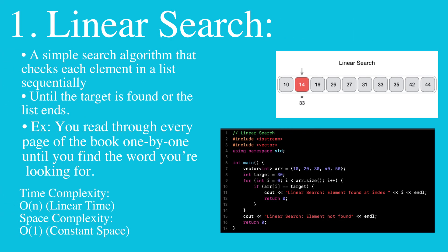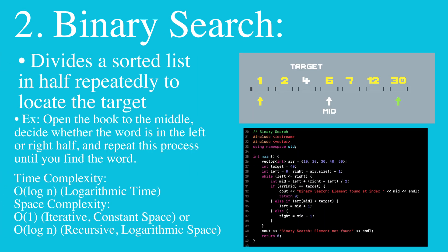Linear search is a simple search algorithm that checks each element in a list sequentially until the target is found or the list ends. In binary search, it is an effective algorithm that divides a sorted list in half repeatedly to locate the target.